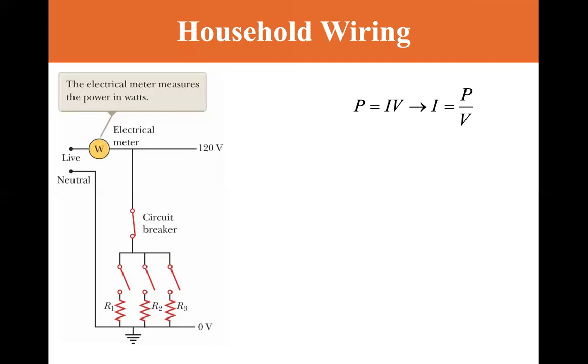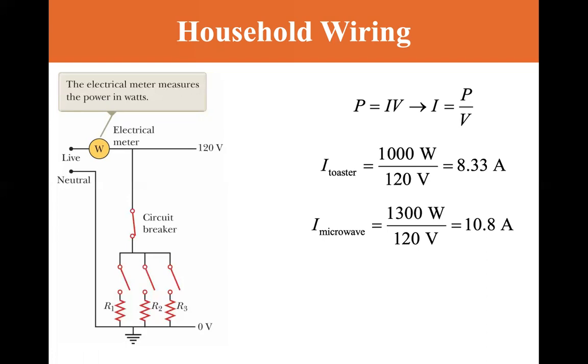Let's say we have a 20 amp circuit and three devices. The first device is a toaster, which is 1000 watts divided by 120 volts, giving you 8.33 amps. You have a microwave, which is 1300 watts divided by 120 volts, giving you 10.8 amps. And let's say you have a coffee maker.